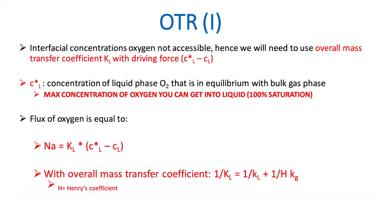Here I'm going to talk about how we actually get to the equation for the oxygen transfer rate. It's not possible to measure interfacial concentrations of oxygen. If we want to look at the mass balance, we need to consider the overall mass transfer coefficient. The flux of oxygen is normally equal to Na, so big K, the overall mass transfer coefficient, times the driving force, which is the concentration gradient of oxygen.